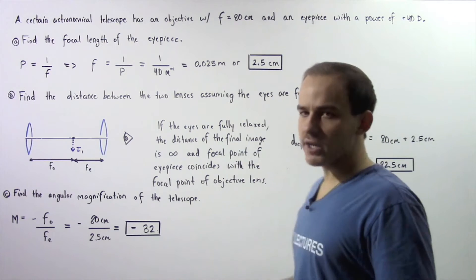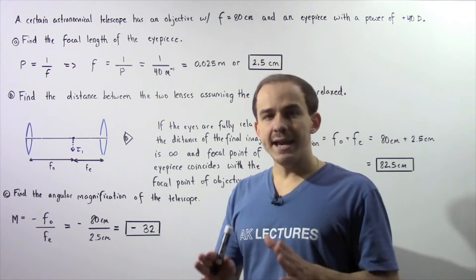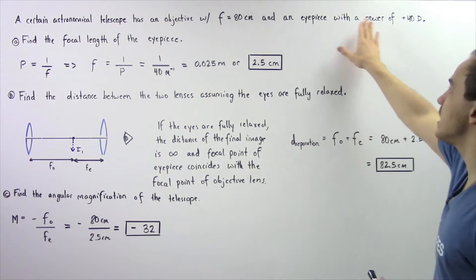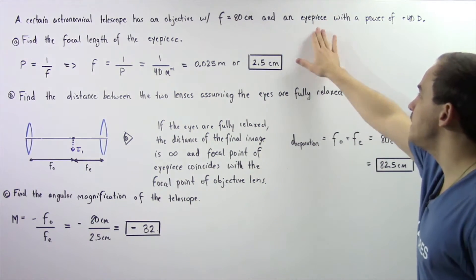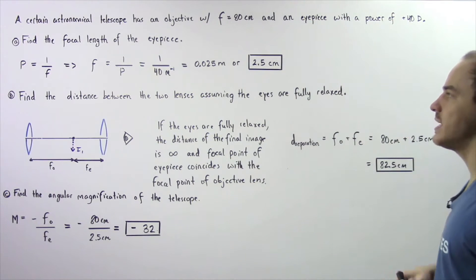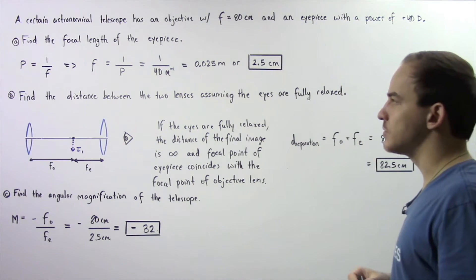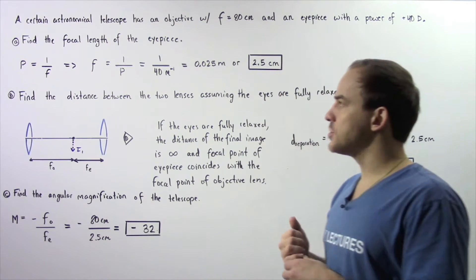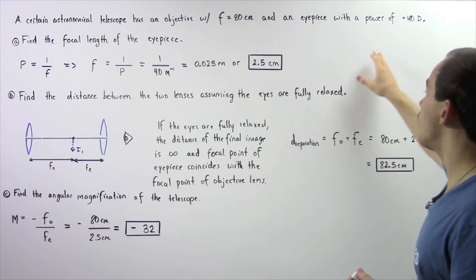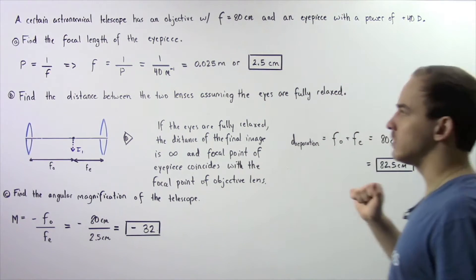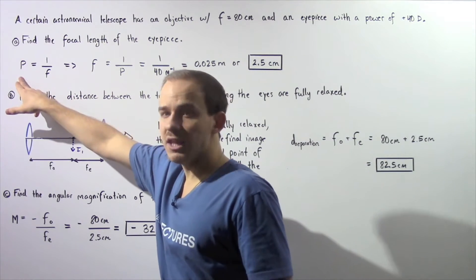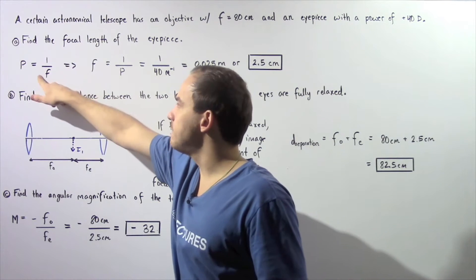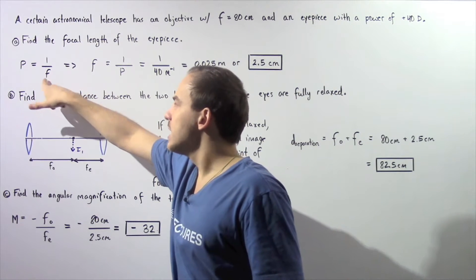Let's begin with part A. In part A we want to find the focal length of the eyepiece lens, let's suppose in centimeters. Let's recall the relationship between power and focal length: the power of a lens is equal to 1 divided by the focal length.